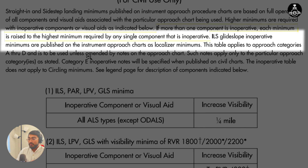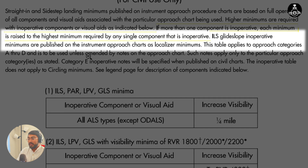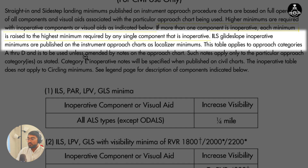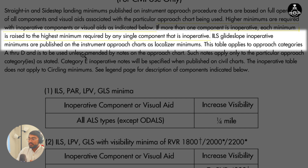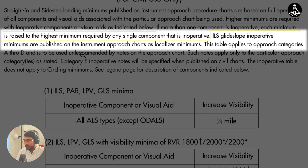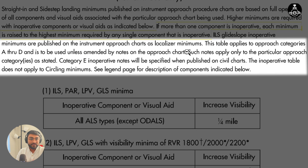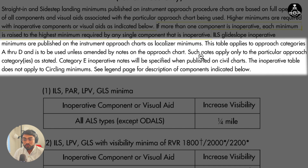ILS glide slope inoperative minimums are published on instrument approach charts as localizer minimums. So if the glide slope is inoperative, you don't have to come to the components table — you just use the localizer minimums.